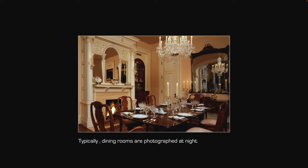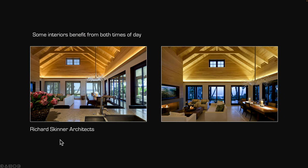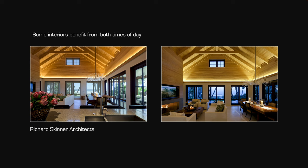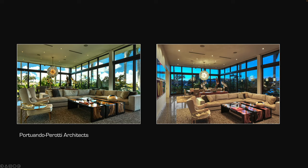Nighttime shots require a lot of planning and care. Here are two examples from Suzanne Martinson Architects and Rafael Portwondo's group — one interior looking out over the ocean, another looking off into the canal. Typically dining rooms are photographed at night, and you want to plan ahead for what's on the table and how the lighting will work. Some rooms make great daytime shots but also really good night shots, and overhead lights like chandeliers or downlights give you great opportunities for beautifully lit interiors. People enjoy those rooms at different times of day, and as a photographer you want to show the lifestyle of these rooms.